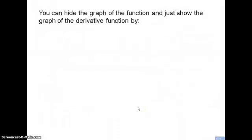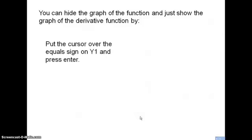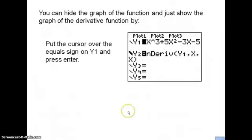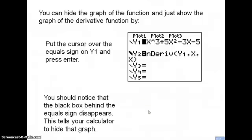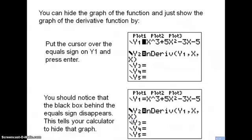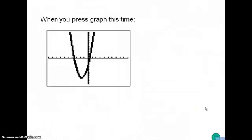If you just want to see the graph of the derivative function and not the original, you can hide a graph. Put the cursor over the equal sign on Y1 and press Enter. You should notice the black box behind the equal sign disappears — this tells your calculator to hide that graph and only graph functions that have the black box around the equal sign. When you press Graph, all you see is the graph of the derivative function.